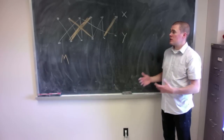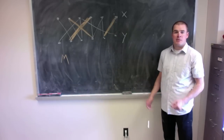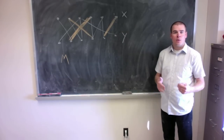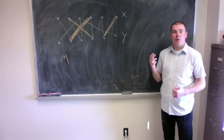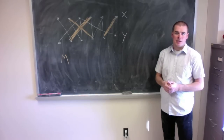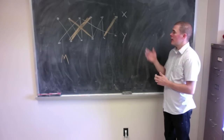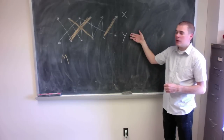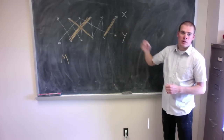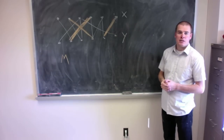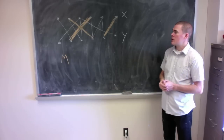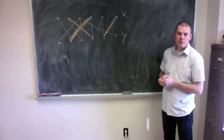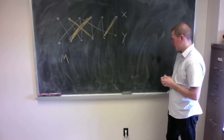Hello again. We're going to go through an example of the augmenting paths algorithm to find either an M-augmenting path or a minimum vertex cover, given a bipartite graph and a matching in that bipartite graph. Here's an example of a bipartite graph with bipartition X and Y, and the thick orange edges are my matched edges. I want to perform the augmenting paths algorithm on this bipartite graph.